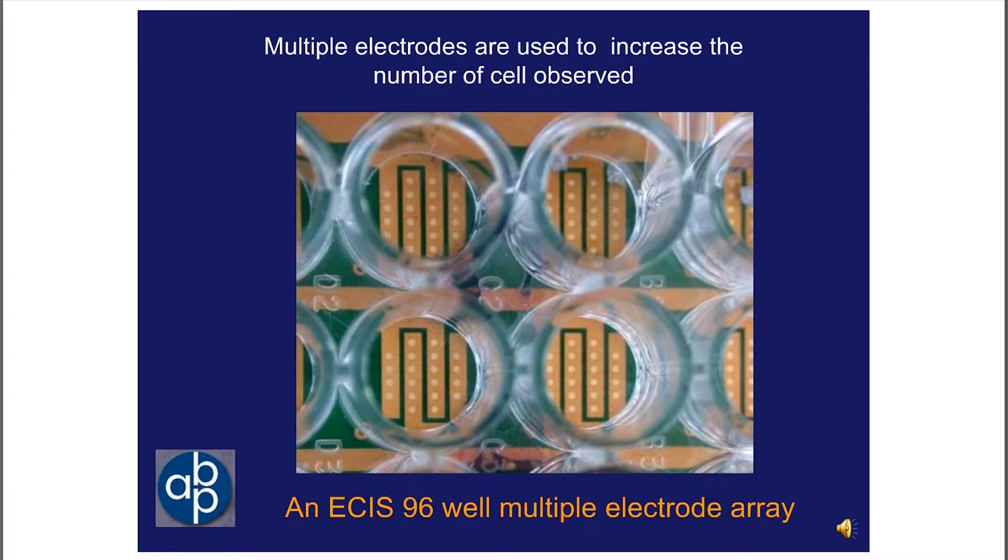We're not limited, though, to a single electrode. And if one wishes to study the activities of a larger population of cells, we simply bring in multiple electrodes. Here we're looking at four wells on the bottom of a 96-well plate, and you can quite clearly see the small active ECIS electrodes.